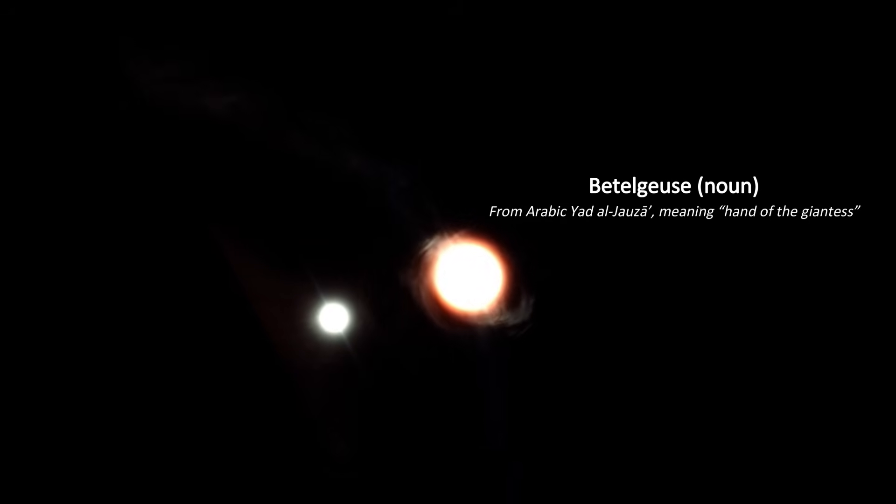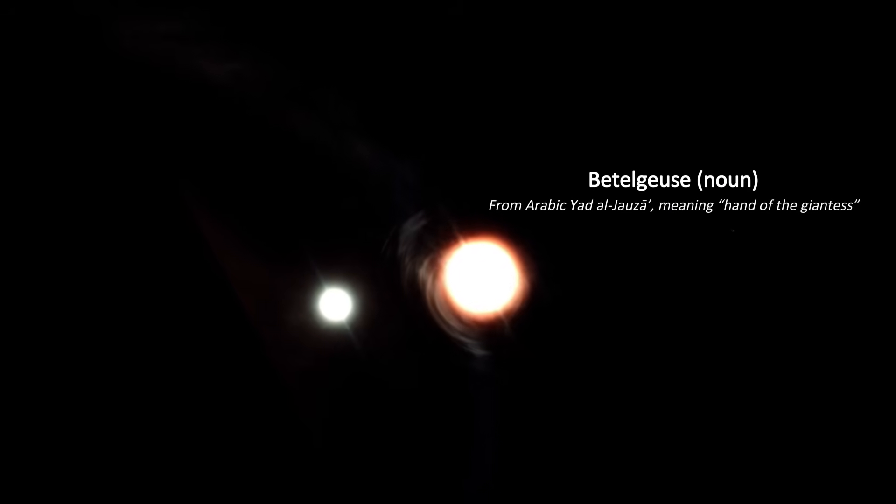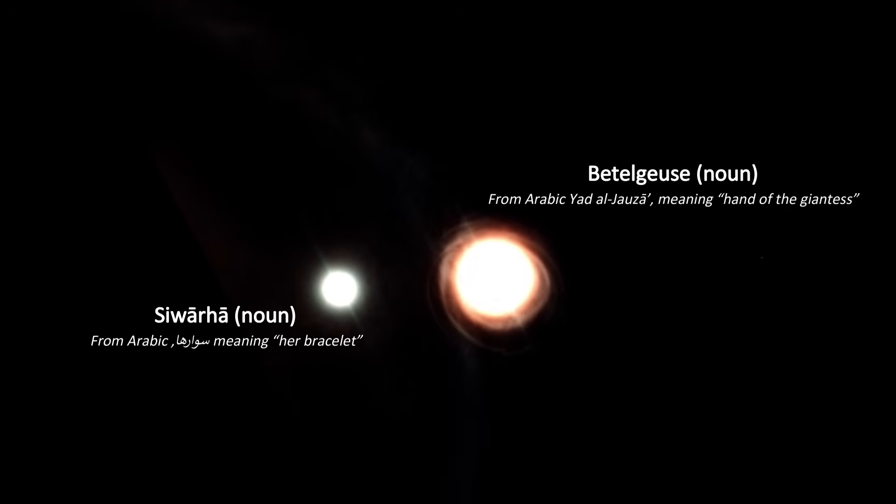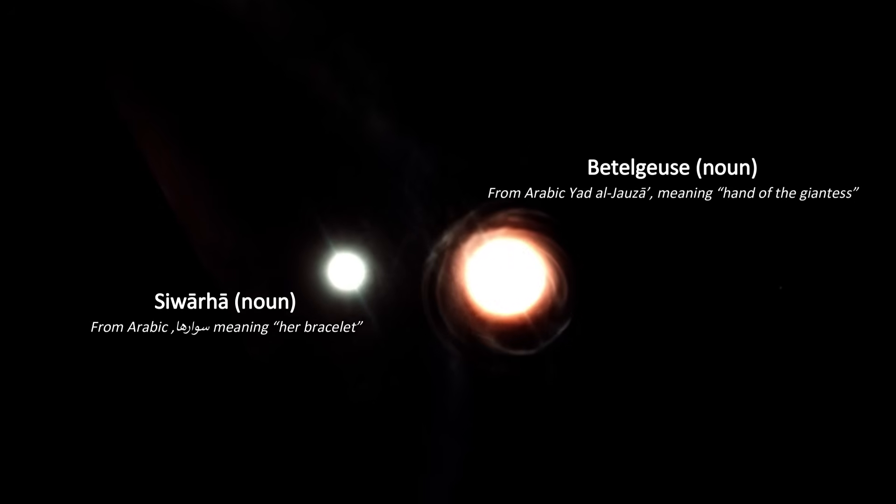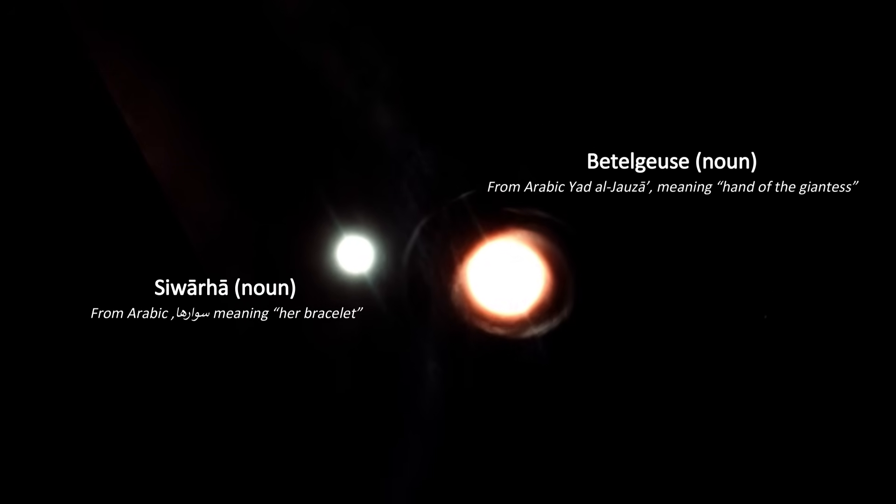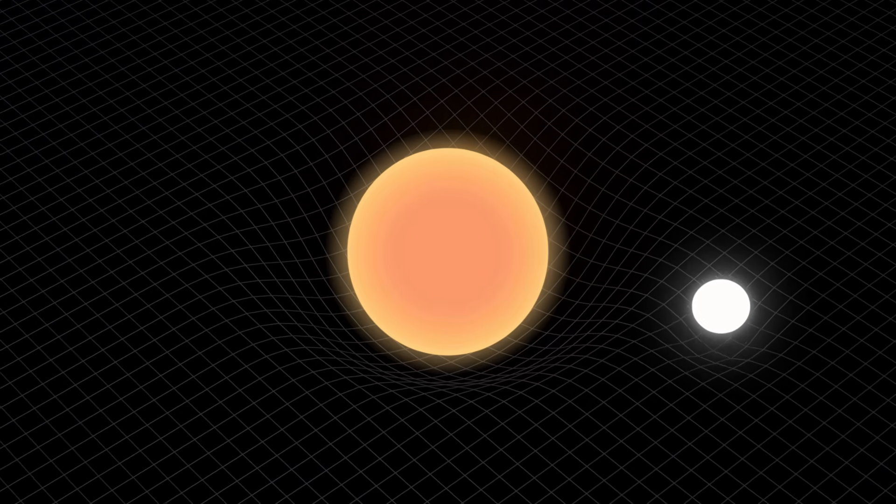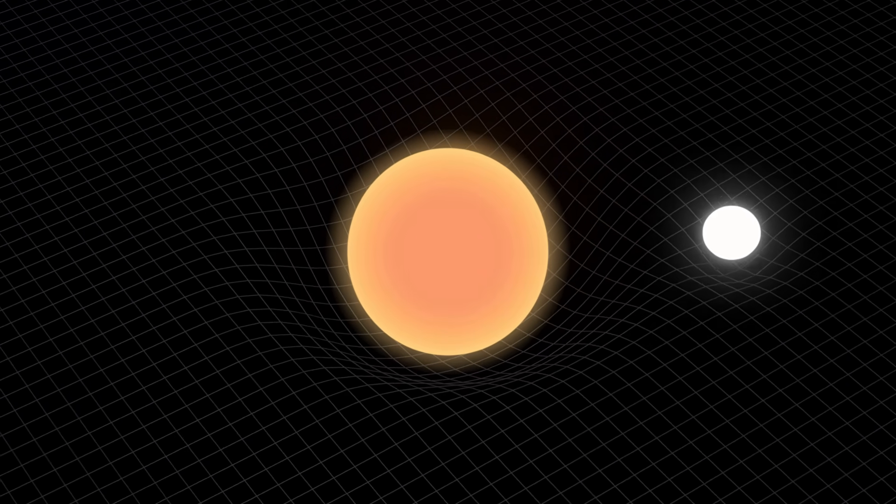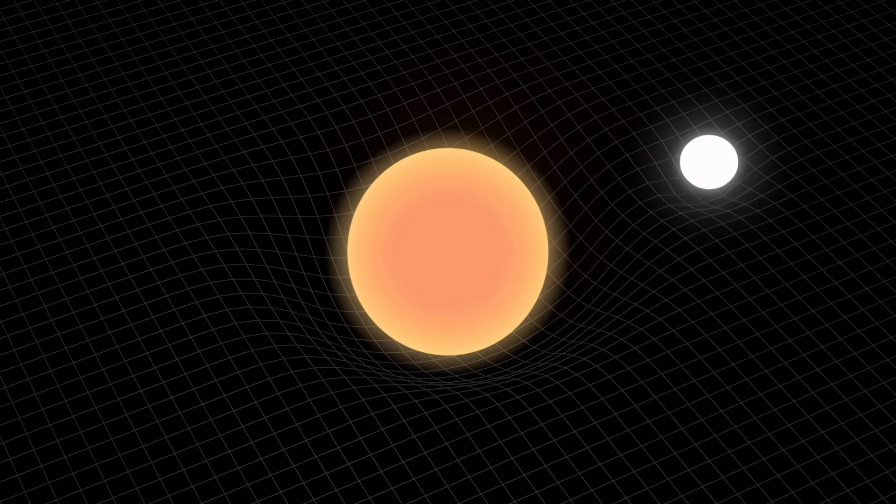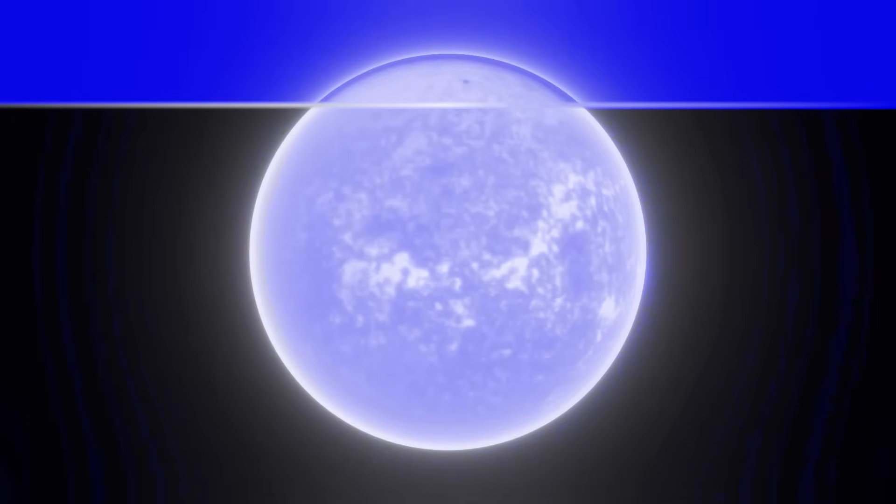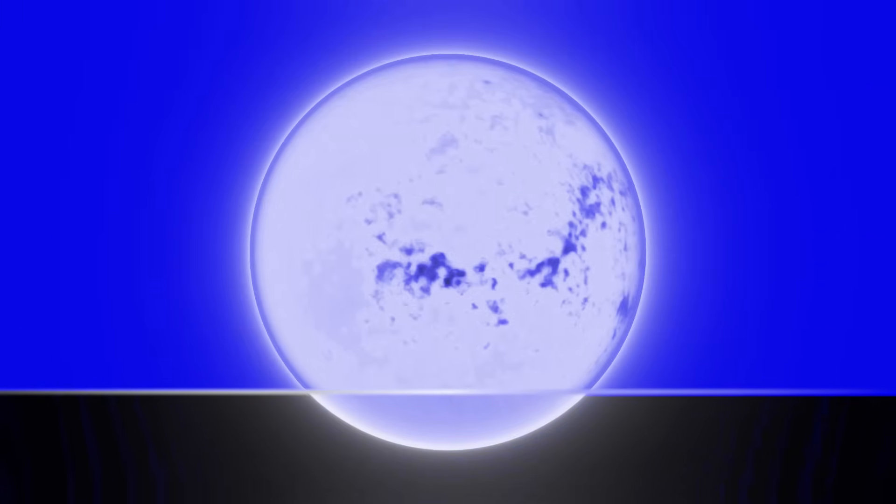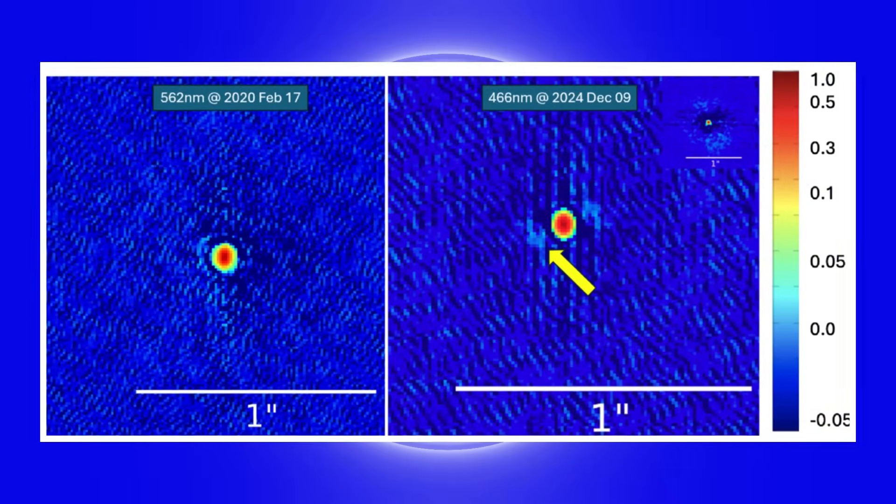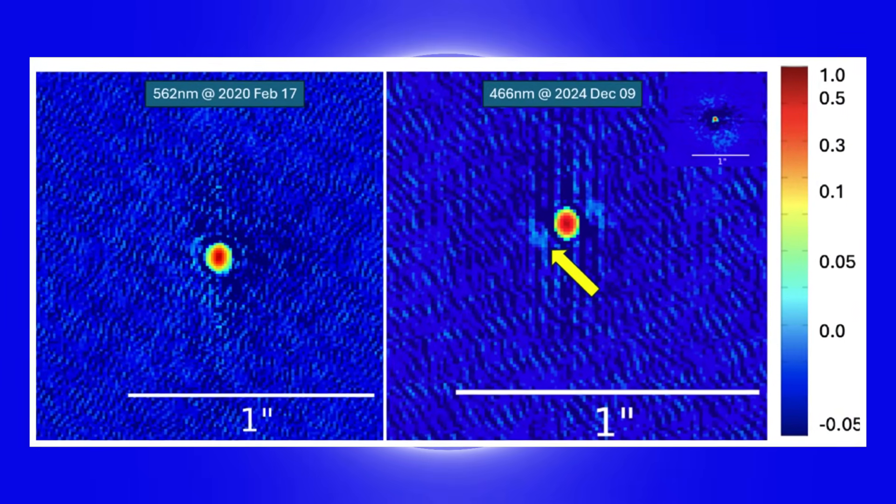Betelgeuse, which means Hand of the Giantess in Arabic, now officially has a companion that a team of astronomers has proposed naming Sawarha, which means her bracelet. Personally, I can't think of a better name to honor the star that orbits Betelgeuse. Upon this discovery, Howell and his team analyzed the companion star's light to determine its characteristics. And what they found aligned perfectly with previous predictions for Betelgeuse.